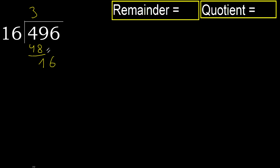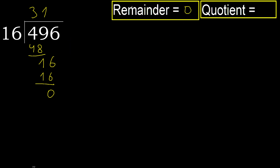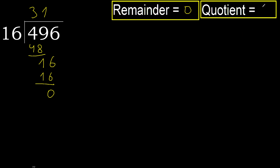Next, bring down 16. 16 multiplied by 1 is 16, which is not greater. 16 minus 16 is 0. Next — that is not a number, therefore finish. The answer is complete.